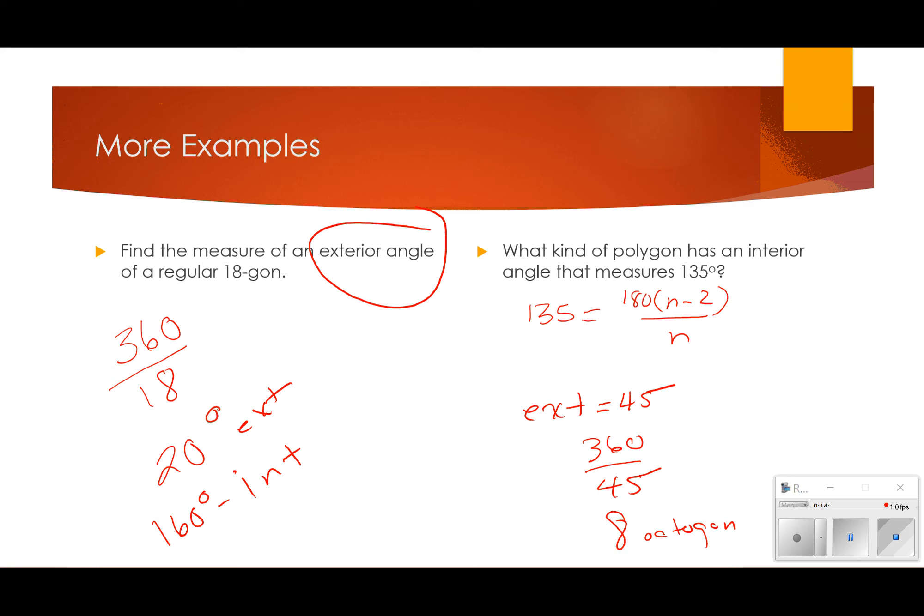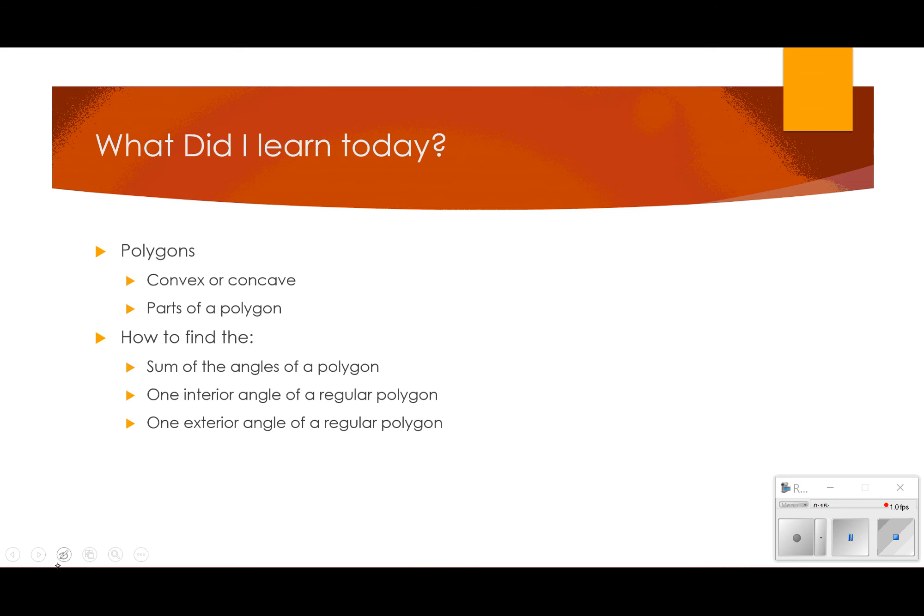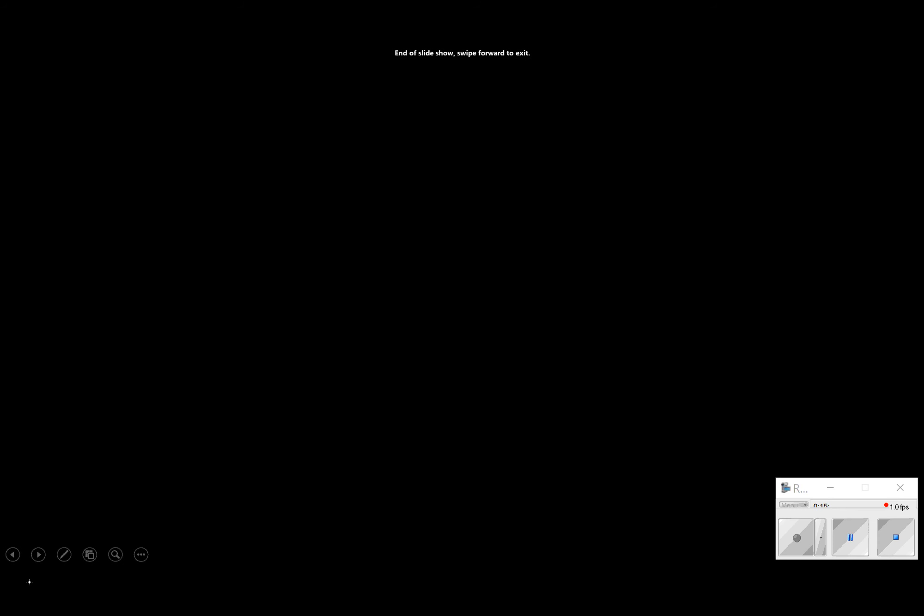Now, I could solve that by multiplying both sides by n. So, I get 135n equals 180n minus 2 minus 360. And I could solve that equation. Either way works, whichever you're comfortable with.